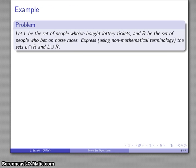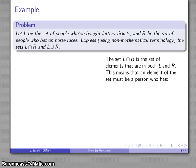For example, let's consider the following. Let L be the set of people who bought lottery tickets and R be the set of people who bet on horse races. And I can express mathematically the two concepts L intersect R and L union R. But what happens when I try to translate these into non-mathematical terminology? What if I try to explain what these sets are to somebody who doesn't speak math?